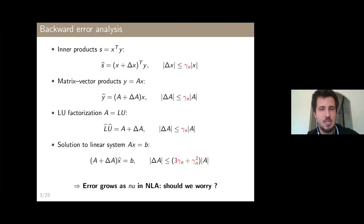This answers the first question: why should we worry about the accuracy of numerical algorithms? We see here that, in principle, the error can grow as n times u. Whether that is a problem depends on what values of n and u we have.